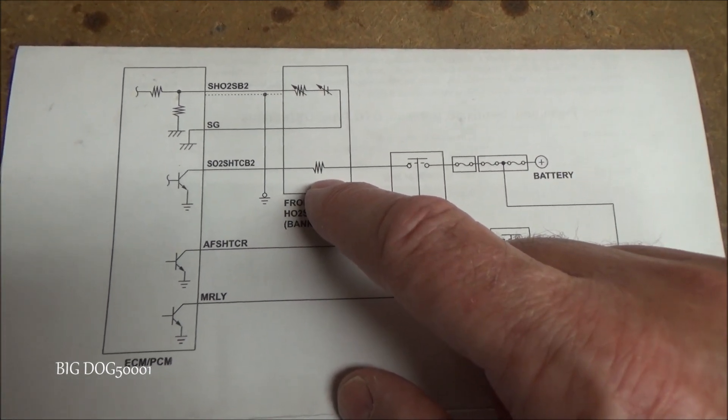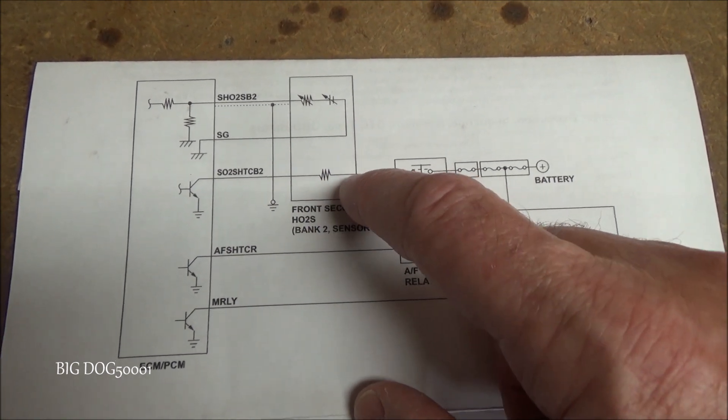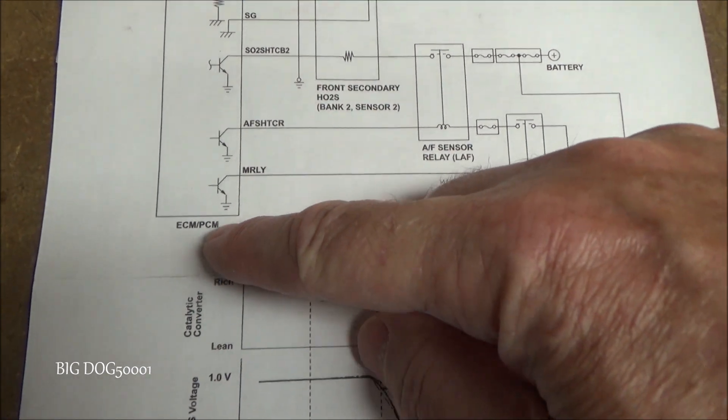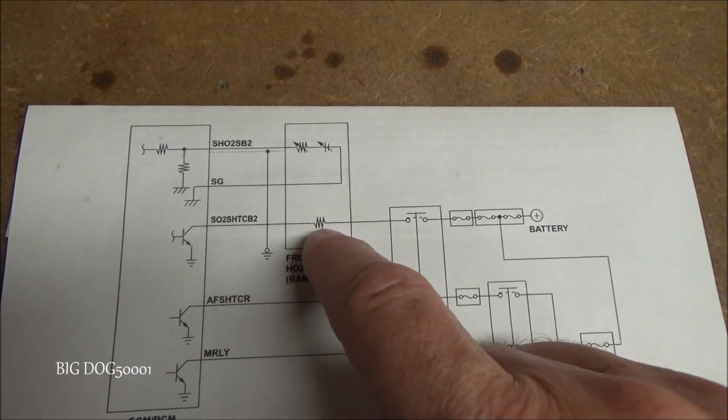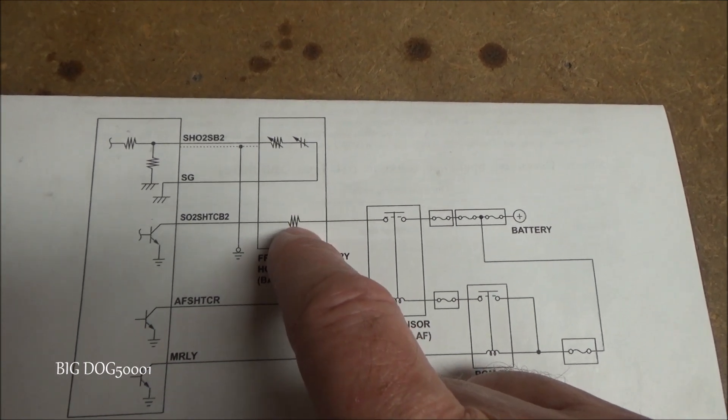Now oxygen sensors work best when they're hot so they're required to have a heater. So that's what this is right here. We got power coming into the heater on this side and over here the engine computer is providing a ground. So that's how our heater operates. The computer just grounds that and turns on the heater.